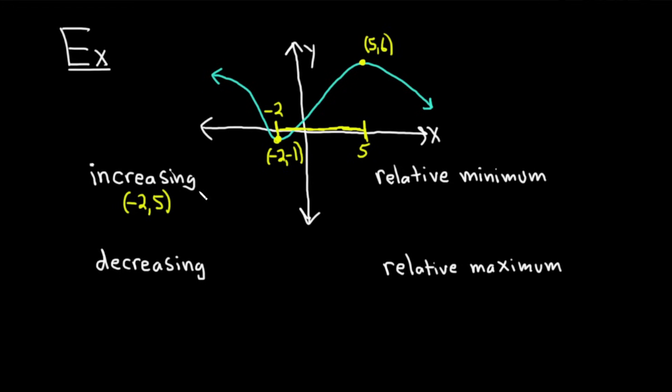And you always use parentheses, so it'll be parentheses negative 2 to 5. Unfortunately, the notation is a bit confusing because here it says negative 2, negative 1, but we're talking about the point, whereas here we're talking about an interval, all the numbers between negative 2 and 5. So one of those unfortunate things, but context should make it clear. The function is getting bigger. The y values are getting bigger between negative 2 and 5.